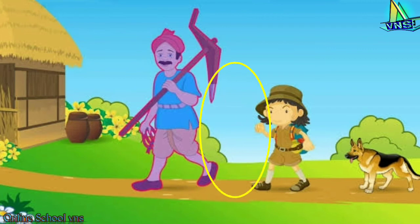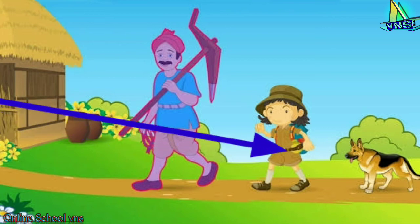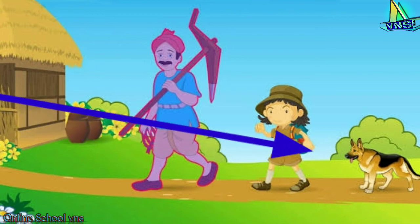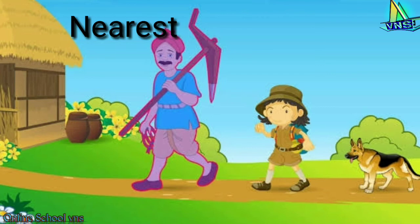In this diagram we can see that a farmer, a girl, and a dog are moving towards a hut. The farmer is having very less distance from the hut, and the dog is having the most distance from the hut, so the farmer is nearest and the dog is farthest.